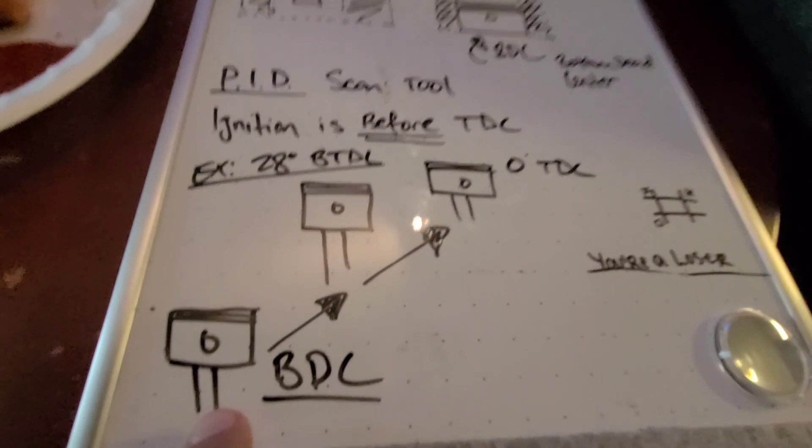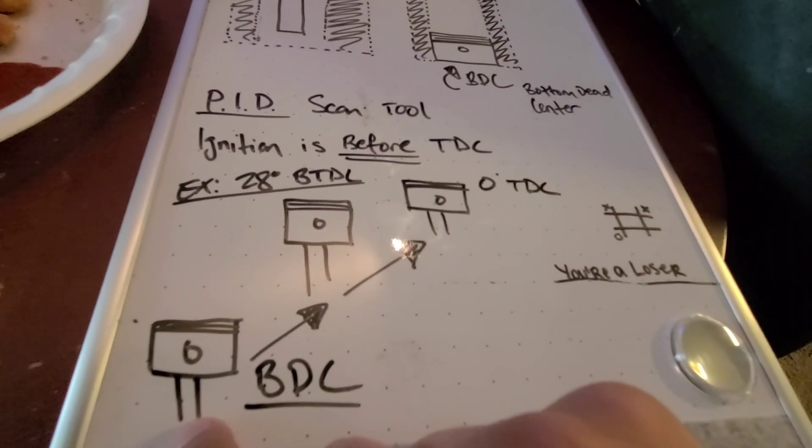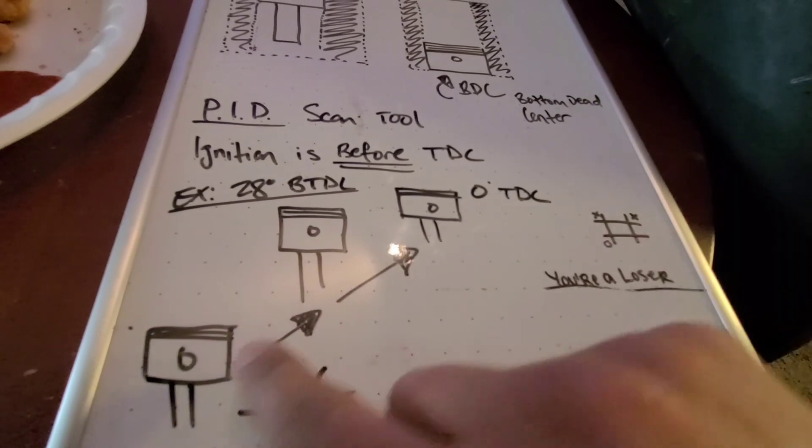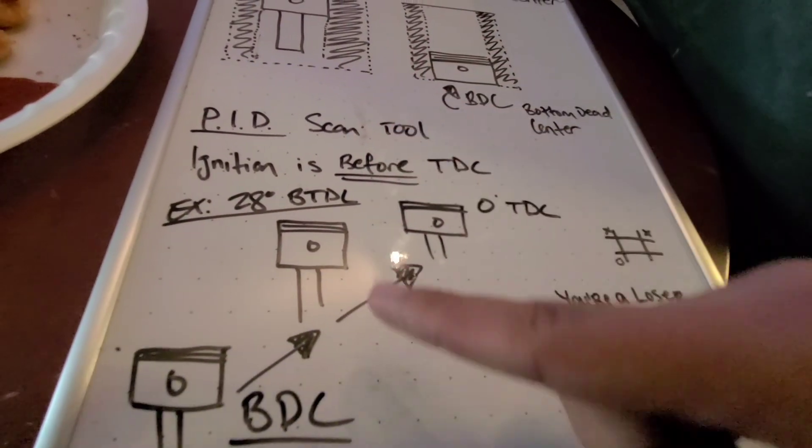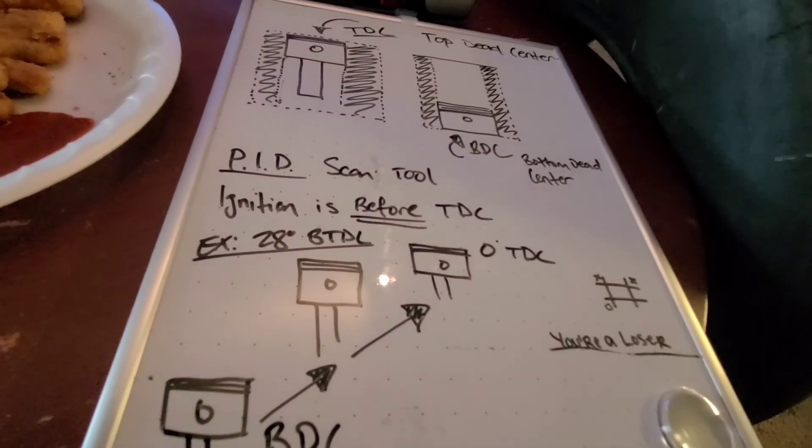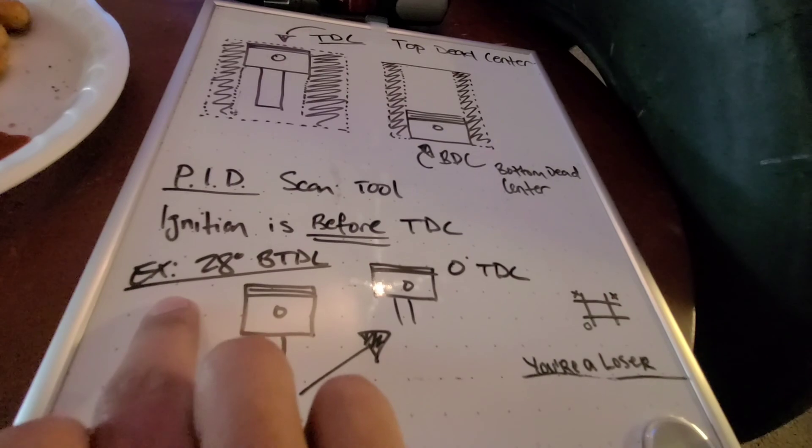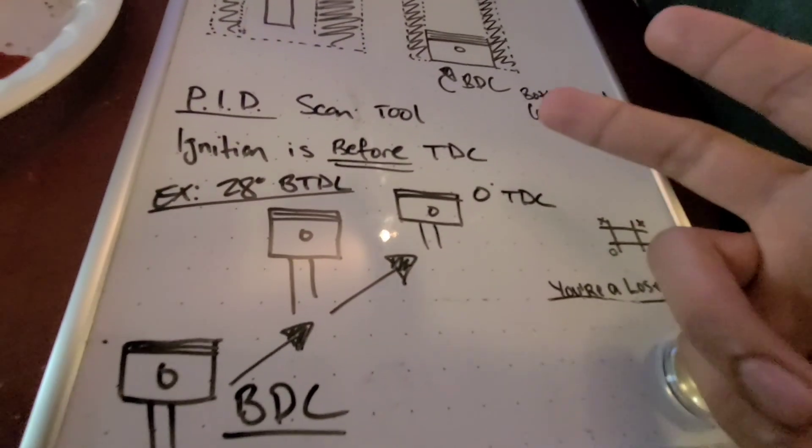So, bottom dead center. As the engine's turning over, it is going to raise to top dead center, go back down. You know, you have your intake, compression, power, and exhaust. And it moves on. So for example, 28 degrees before top dead center. When they say I'm running 28 degrees of timing.